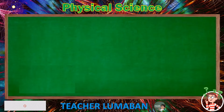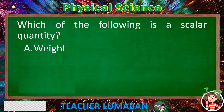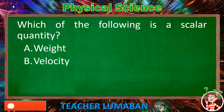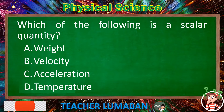Which of the following is a scalar quantity? Letter A: Weight. Letter B: Velocity. Letter C: Acceleration. Letter D: Temperature.